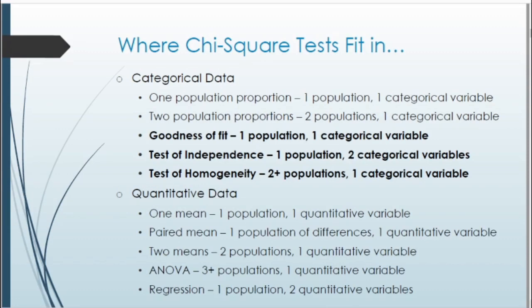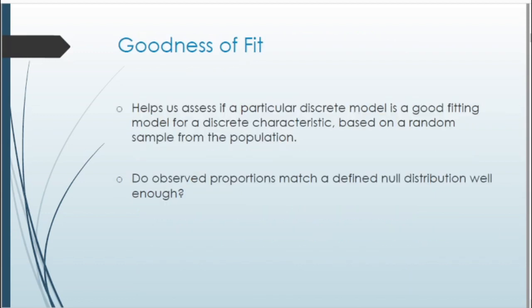Let's do a little bit of review. Talking about chi-squared tests, we'll be working with categorical type data, similar to our one and two population proportion type tests. There are three different types of chi-squared tests. The first one is called goodness of fit, which helps us assess if a particular discrete model is a good fitting model for a discrete characteristic based on whatever random sample we're working with. Basically, we have a null distribution of particular proportions and we want to see if the observed proportions in our sample match that null distribution.